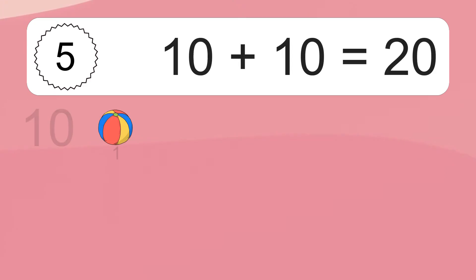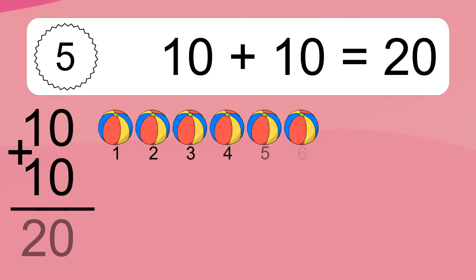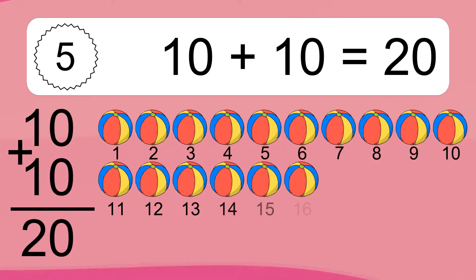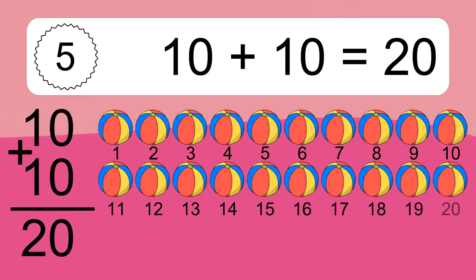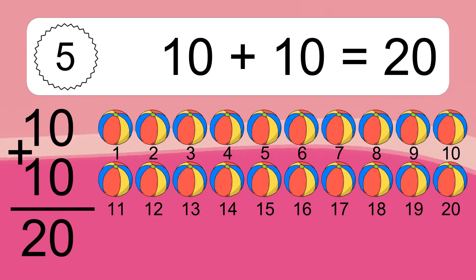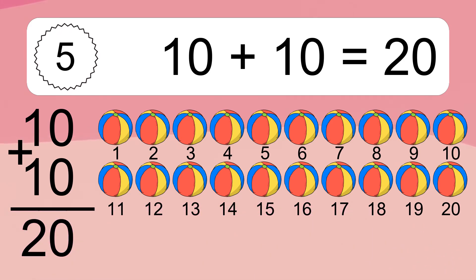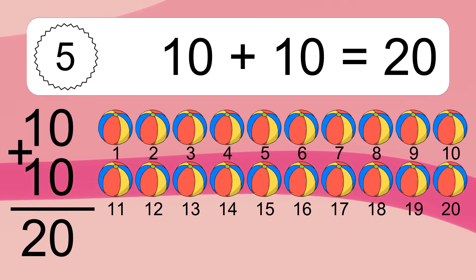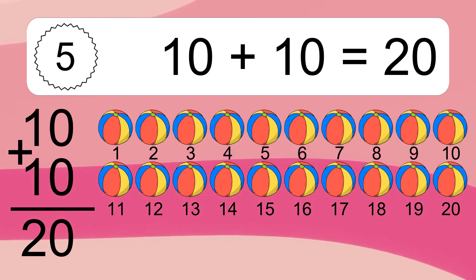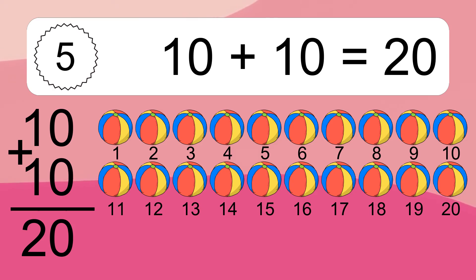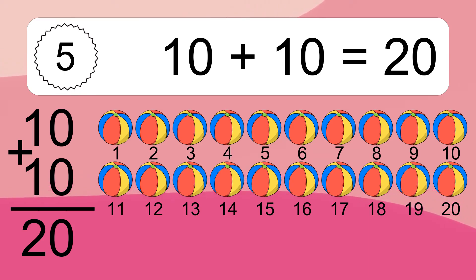10 plus 10 equals what? 10 plus 10 equals 20. Let's count it: 1, 2, 3, 4, 5, 6, 7, 8, 9, 10, 11, 12, 13, 14, 15, 16, 17, 18, 19, 20.